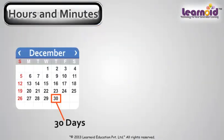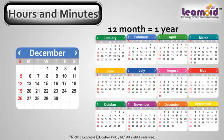There are 30 days in a month and 12 months in a year.